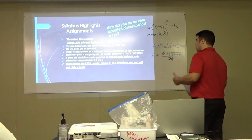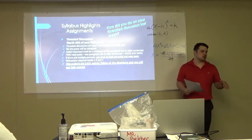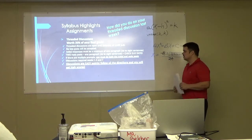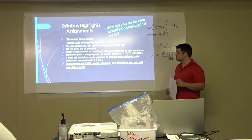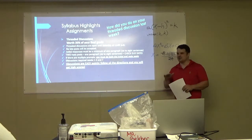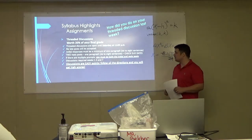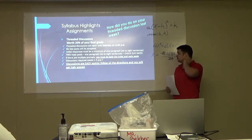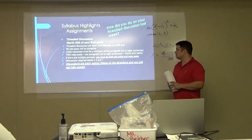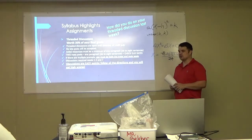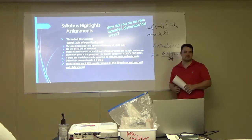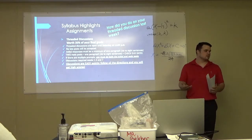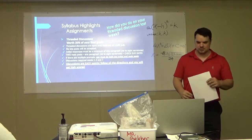Remember, threaded discussions are worth 20% of your final grade. Keep in mind that's a big chunk - that's at least a letter grade. Threaded discussions are due Saturday at 11:55 p.m. Late posts will not be accepted. Initial responses must be a minimum of one paragraph, six to eight sentences - very easy. Two reply posts, one paragraph, six to eight sentences each - again, very easy. If there are multiple prompts, you must do both the initial and the reply post. Discussions are required weeks 2, 5, and 7. Discussions are easy points because they don't have to be perfect.